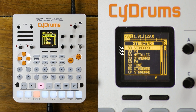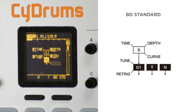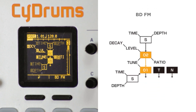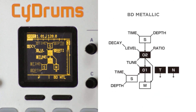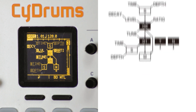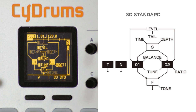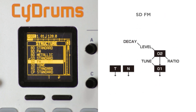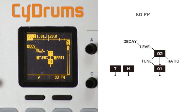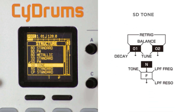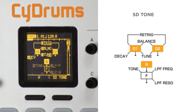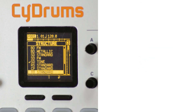The BD structures are for bass drums. The BD Standard is the one we've already seen. BD-FM uses 2 oscillators, the first one being modulated by the second that you can detune. The BD Metallic structure is similar to the FM one, with the difference that it adds a ring modulation to the FM synthesis. The SD structures are for snare drums — the SD Standard mixes 2 oscillators with pitch sweep and a dedicated filter module for the tone. The SD-FM is similar to the FM structure for the bass drum except it doesn't have the pitch sweep. And the SD Tone uses 2 oscillators but the second one is pitch modulated by some noise, giving some classic 80s drum machine sounds. The rimshot, clap and tom structures only have a standard version.